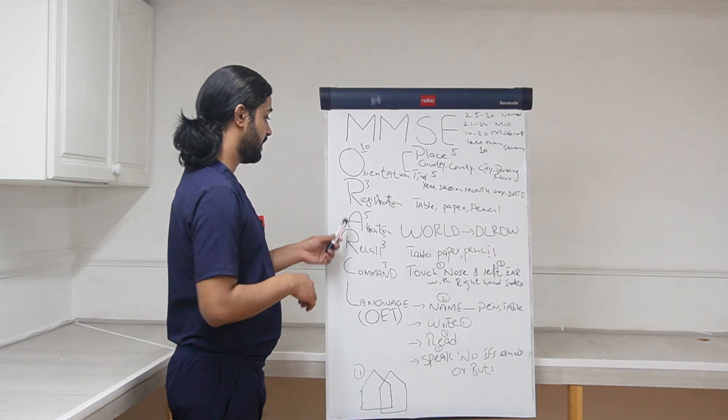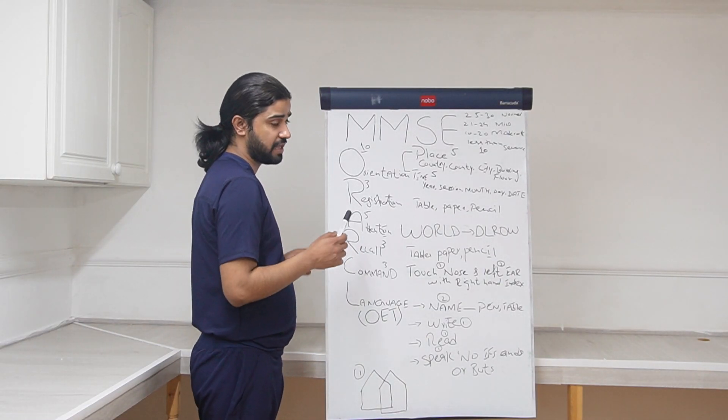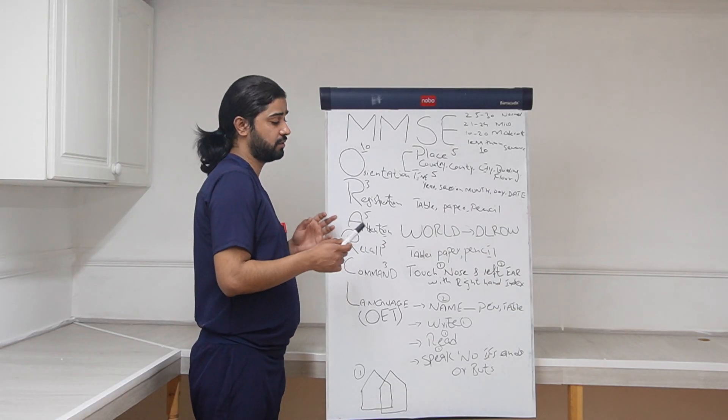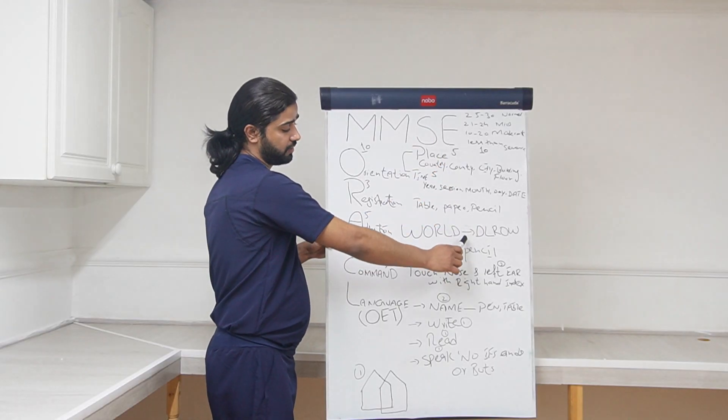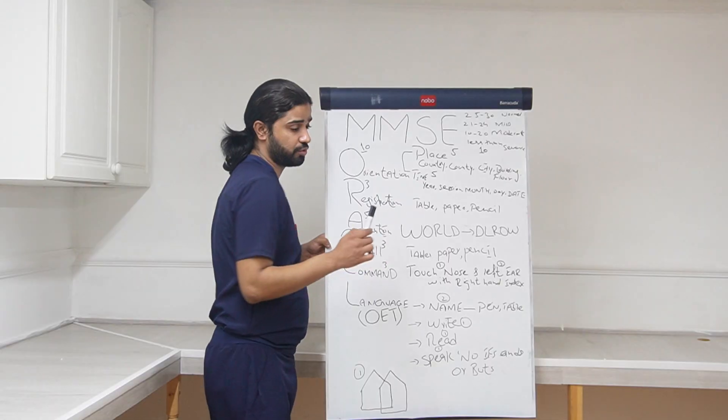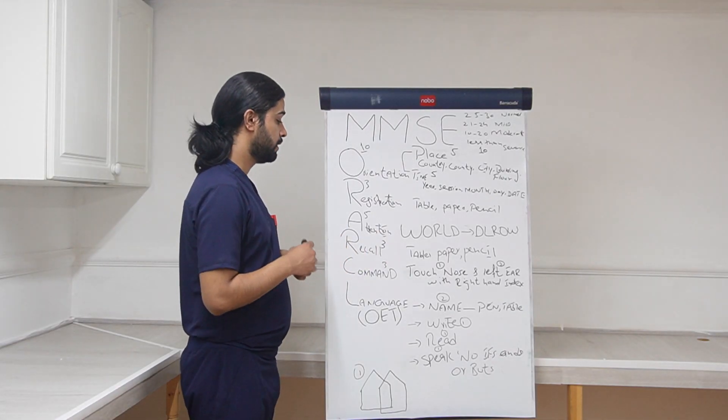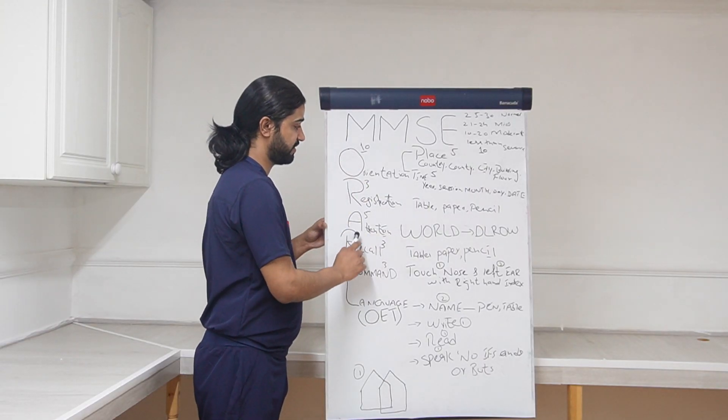Next is attention. Attention has 5 marks. So here you will say, can you please spell the word WORLD backwards? So W-O-R-L-D. Patient is able to spell backwards D-L-R-O-W, so score him 5. So up till now we have done orientation, registration, and attention.